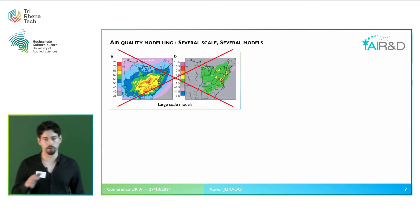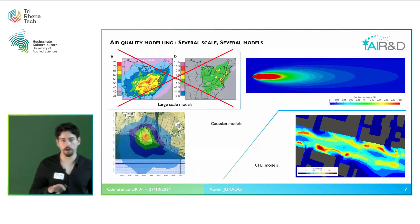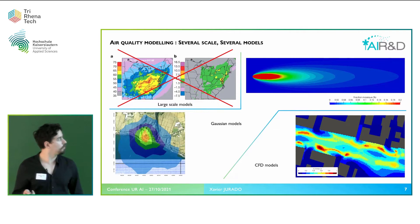The air pollution issue can span from continents to streets, and as you may guess, you don't use the same model for continents as for streets. I am specialized in urban areas, and for urban areas there are two kinds of models. There are Gaussian models, which are good because they can cover wide areas and are fast to compute. However, they have a major drawback: they do not take into account buildings very well, and in urban areas, that is a big issue.